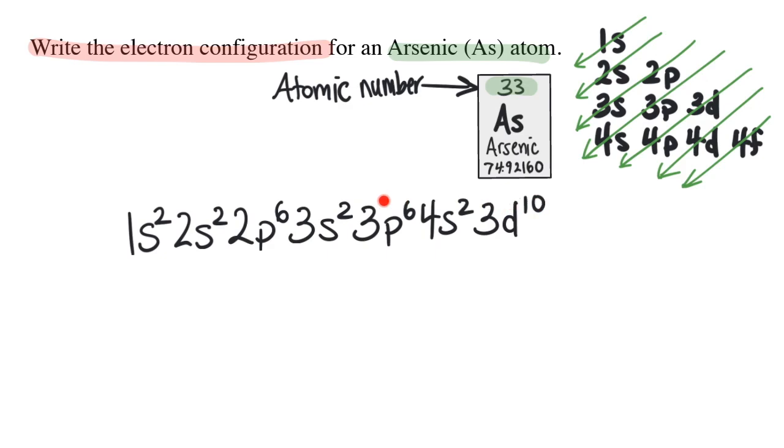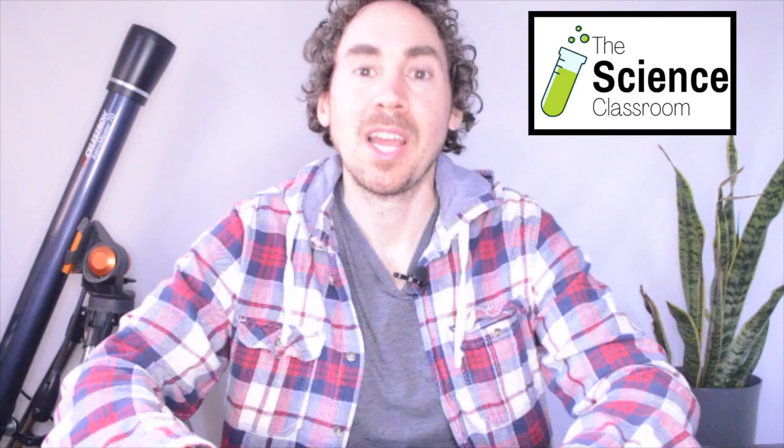We're up to 30 electrons, so just 3 more to go. The next sublevel is the 4P. A P sublevel can hold a maximum of 6 electrons, but we're only going to write a 3 because we have 3 electrons left for arsenic. Just to check that we got it correct, when we add up all the superscripts, it comes out to 33 which matches the atomic number for arsenic.